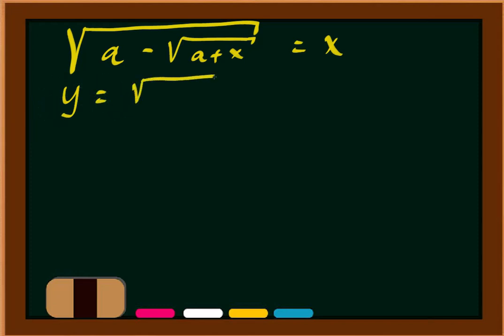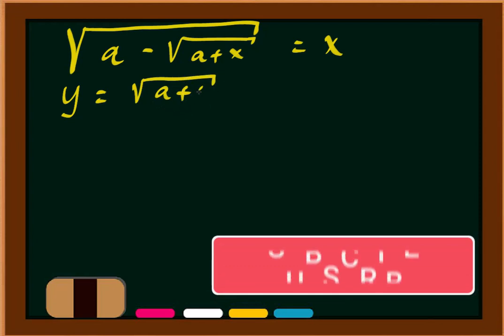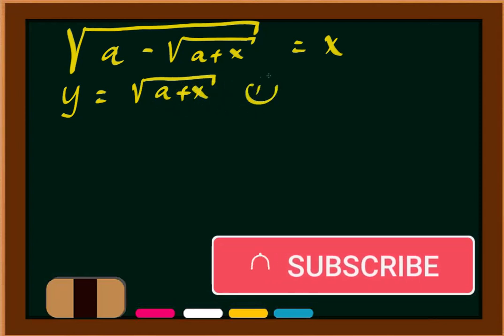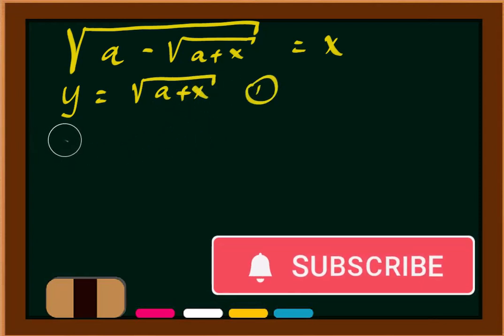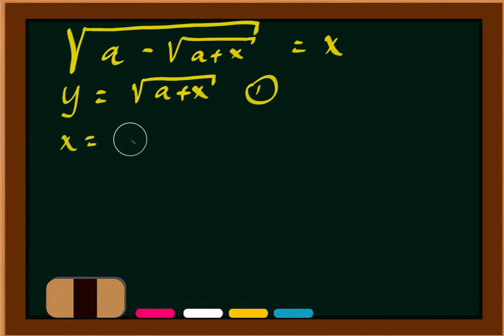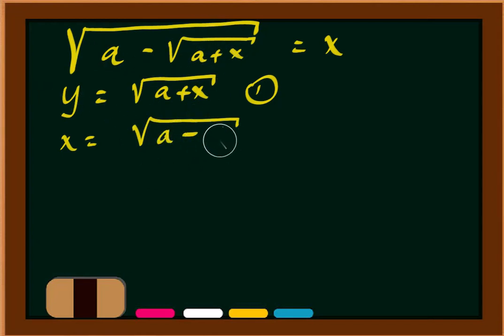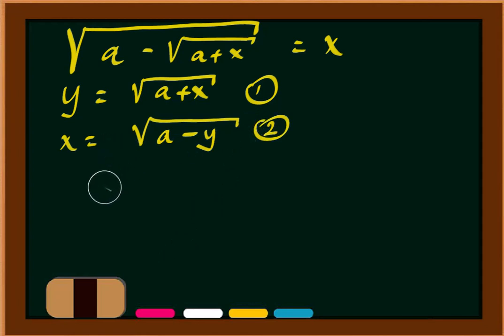We let y equal to square root of (a plus x), so that the original equation becomes x is equal to square root of (a minus y). Now we have two equations, and we can just square each of them.